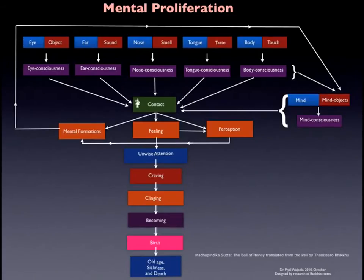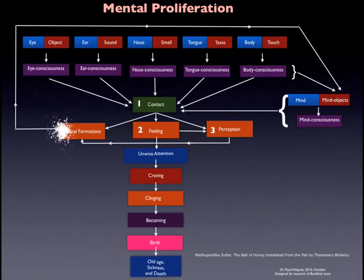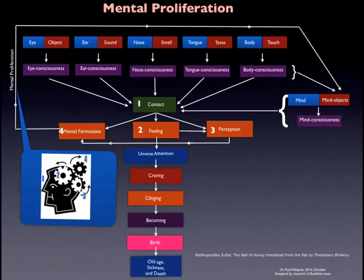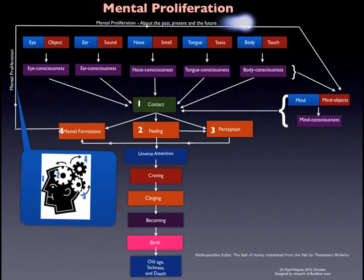This concept in Buddhism is also called Mental Proliferation, or Papancha in Pali. These are the steps: contact can lead to feeling; feeling can influence perception; perception can influence mental formations; and mental formations can then lead to mental proliferation — about the past, the present and the future. So this is basically a feedback loop where we keep going and going about the past, present and future.